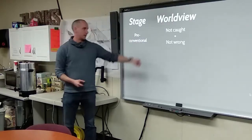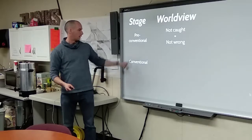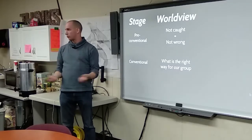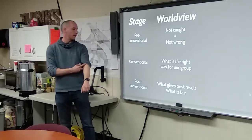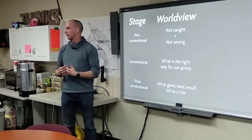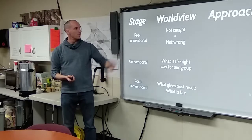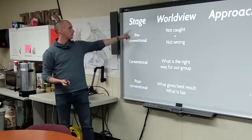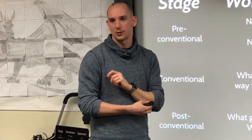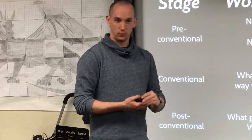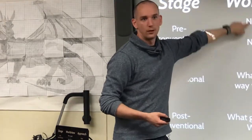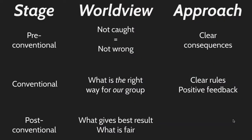At the pre-conventional stage, the worldview is: if I wasn't caught, I wasn't wrong. At the conventional stage: I'm trying to find out what the right way is — just teach me how to do it. At the post-conventional level, it becomes: what gives the best result for all — a much more goal-oriented approach. When parenting or teaching at the pre-conventional level, it's really important to have clear consequences, because they don't oversee the consequences themselves. We need to make sure that when they're wrong, they're caught and get feedback. But when they're in the conventional state, they just need clear rules: this is what I expect of you, and this is when you are or aren't adhering to that.